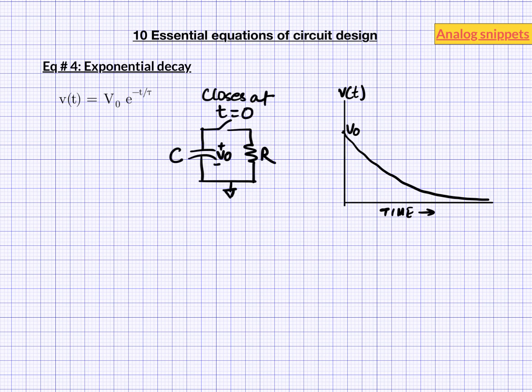My fourth equation is exponential decay. An exponential decay is given by this equation where V0 is the initial value and tau is time constant. Exponential functions are involved in first order systems. For example in this circuit after switch is closed the voltage across capacitor is given by this equation.